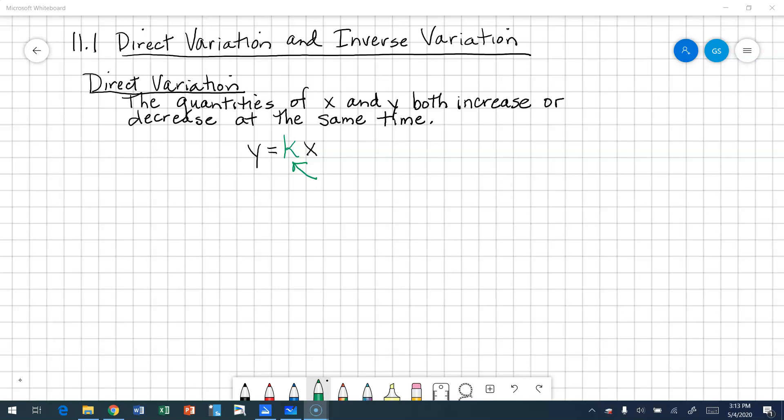Now, if you look at the equation here, it makes sense because they're on opposite sides of the equal sign. So if y is going to increase, k, let's talk about k, k is called the constant of variation. And what does constant mean? Constant means it stays the same.